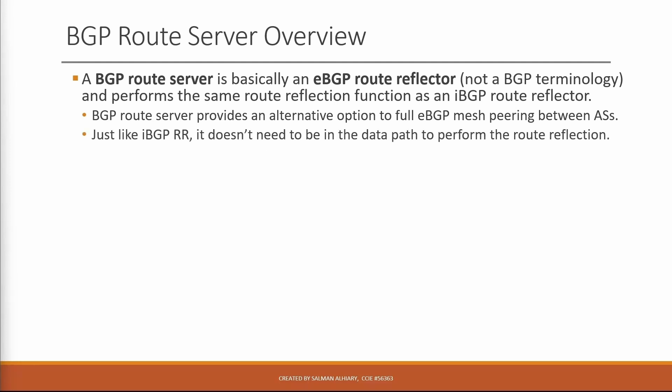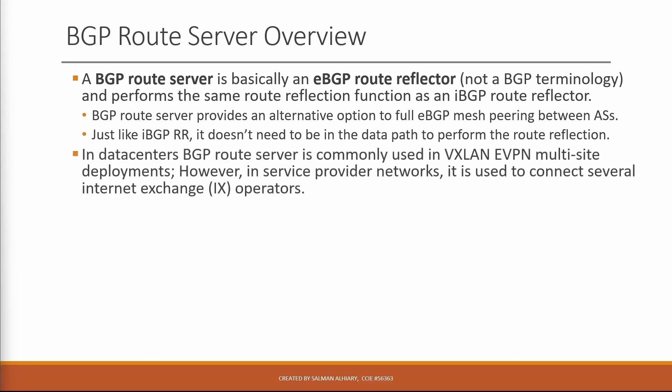Just like an iBGP route reflector, it doesn't need to be in the data path to perform the route reflection. In datacenters, BGP route server is commonly used in VXLAN EVPN multi-site deployments. However, in service provider networks, it is used to connect several internet exchange operators. I will show you an example in each case.